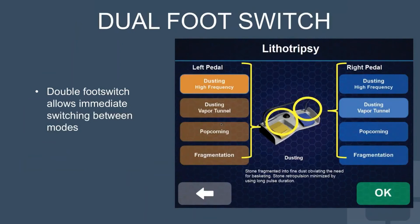Another feature of the MasterPulse system is the dual foot switch, which gives you a lot of benefit: one switch for dusting and one pedal for fragmenting. You can manipulate these settings to have optimized configurations and go back and forth between dusting and fragmenting depending on what you need for that particular case. The dusting settings also offer options for popcorning, dusting, pinning, or painting.